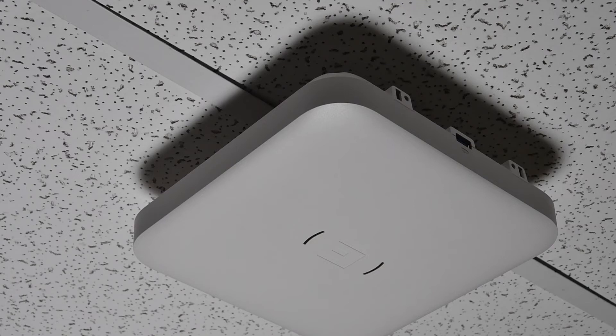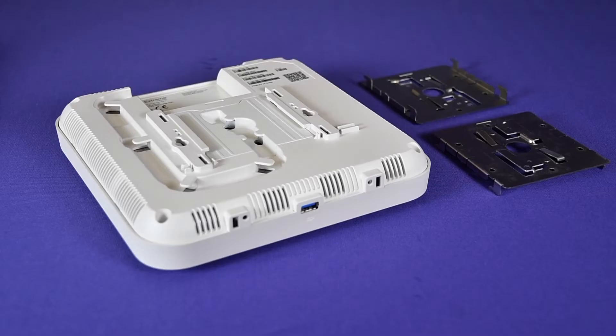To install the access point on a ceiling, you will need the following hardware: the access point and the 37201 stainless steel bracket.